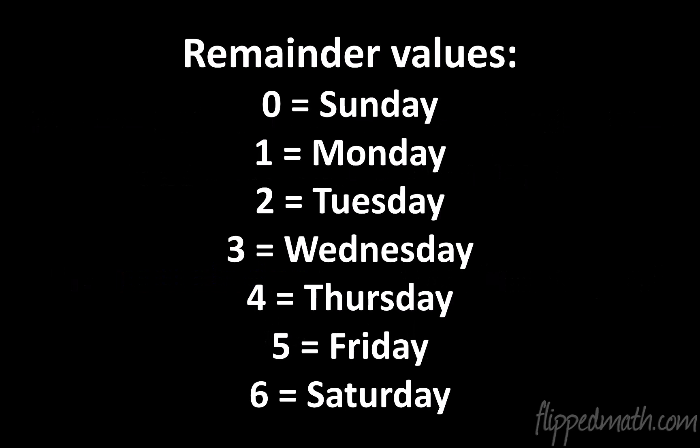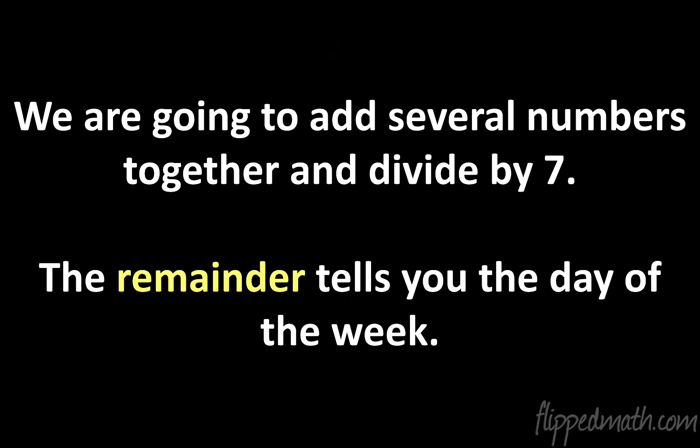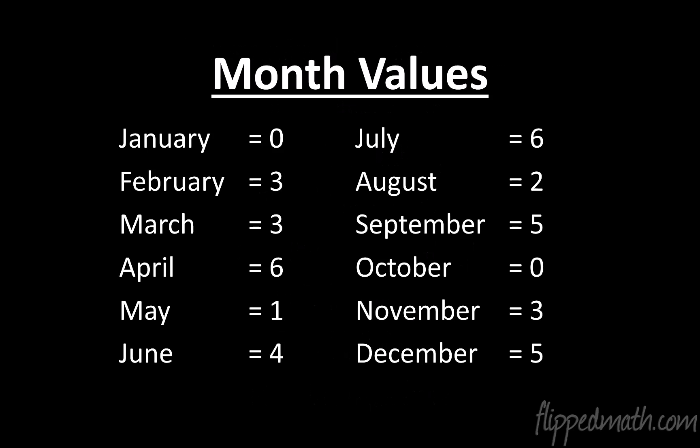So if the remainder is zero, it's a Sunday. If the remainder is six, it's a Saturday. The remainder after dividing by seven tells you the day — I'll come back to this.